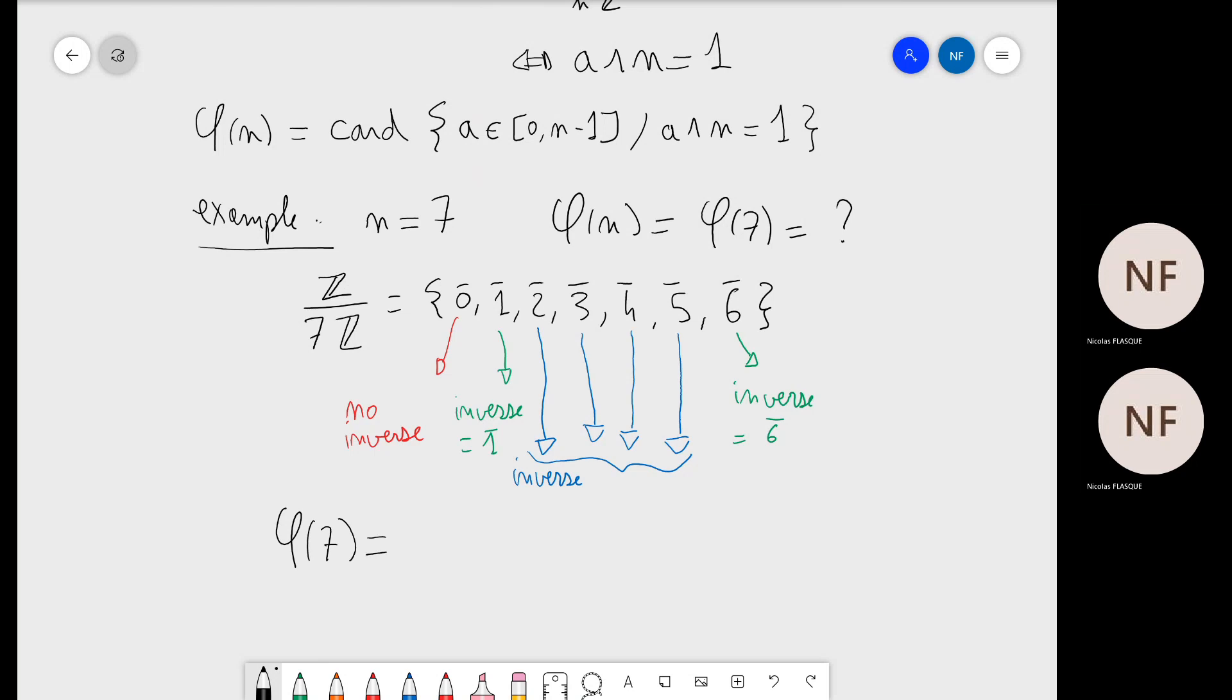Now to get the value of phi of seven, we just have to count the number of elements which have an inverse in Z over 7Z. Apart from zero bar, all others have inverse, so there are six of them. So phi of seven is equal to six because six elements have an inverse in Z over 7Z.